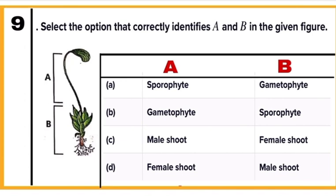Question 9: Identify figures A and B. The given figure is of Funaria showing gametophyte and sporophyte. Funaria is a moss belonging to Bryophyta. The main plant body of bryophytes is the gametophyte, which is B in the figure. A in the figure is its sporophyte, which is not free but attached to the gametophyte and derives nourishment from it. Correct answer is A — A is sporophyte and B is gametophyte.